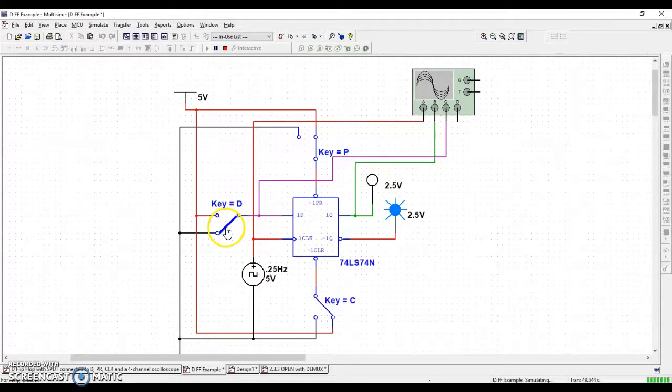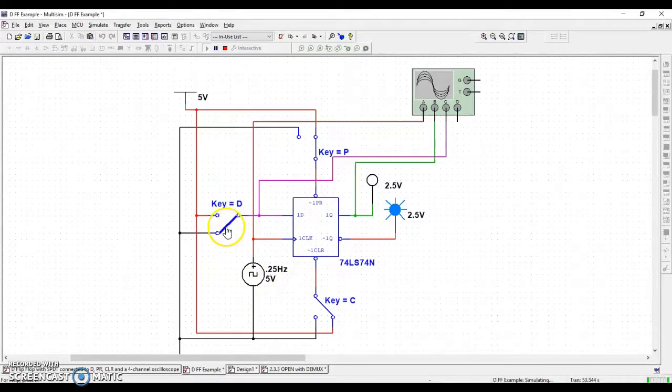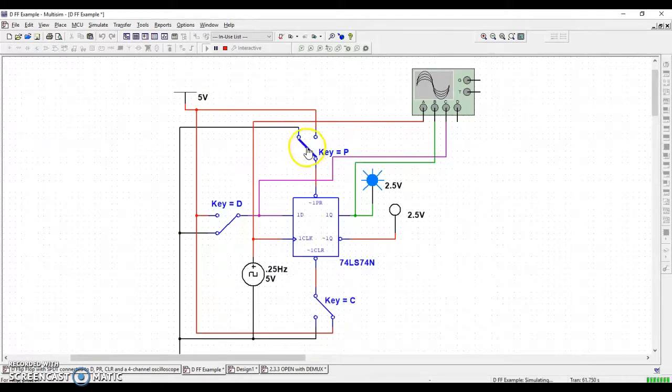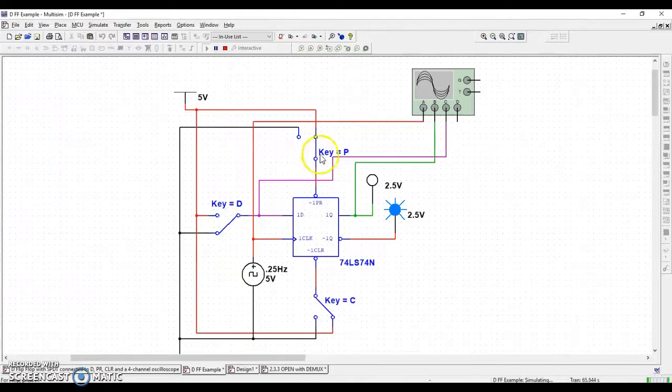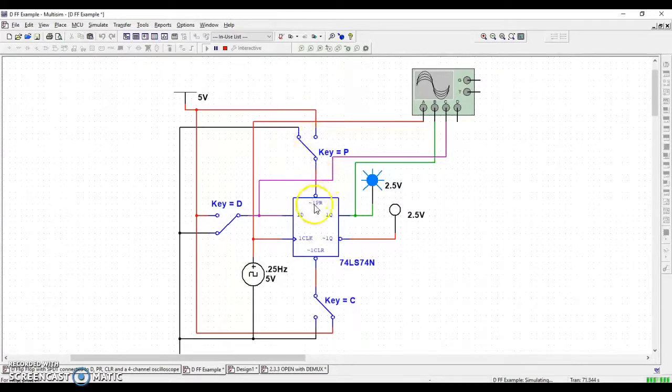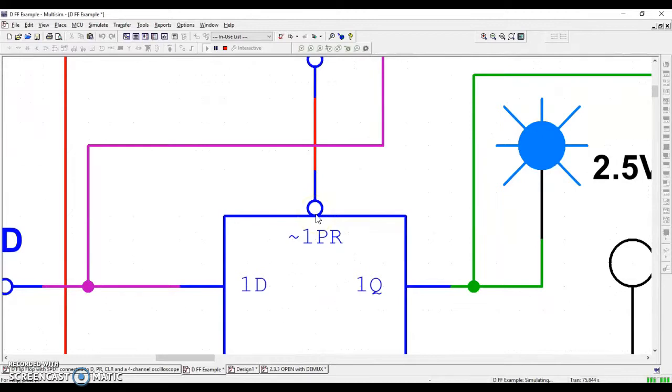But notice what happens is this. It doesn't matter what's going on right now. The fact that D is low, if I go and I take preset and I activate it by flipping it to ground, I'm going to activate this thing by flipping it to ground. Instant, boom, done, right? Now, I deactivated it, it goes back down. Boom, done. I can override the clock by activating preset by setting it to zero. Zero, I know, again, because of the bubble.